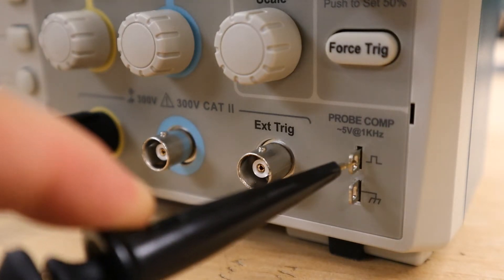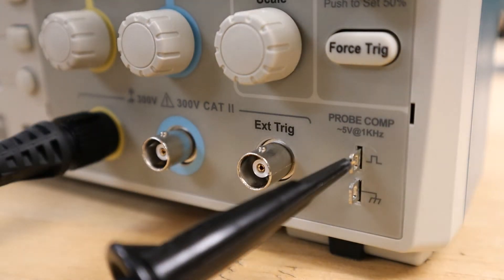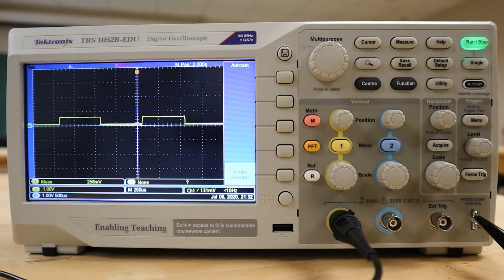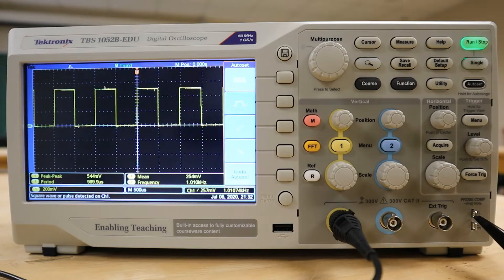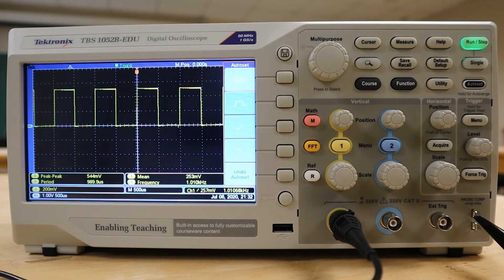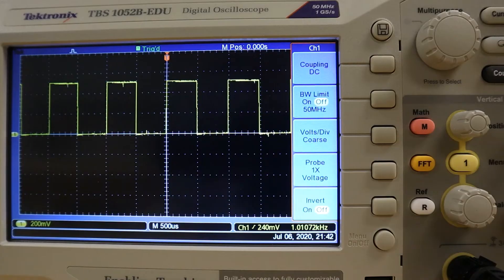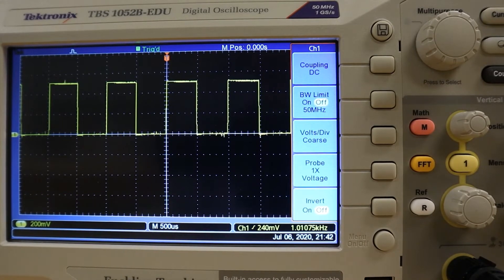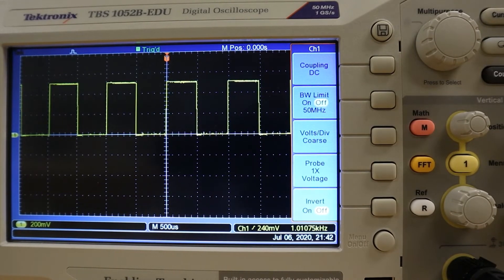In this case, we will connect the hook tip of the attenuator probe to the calibration pin and press the auto-set button. If everything is calibrated correctly, a square wave should appear with a magnitude and frequency as specified by the oscilloscope. If the magnitude did not display correctly, or if no trace was seen, we could drill into the menu for the first channel to locate any potential issues.